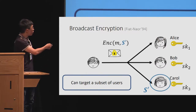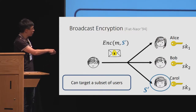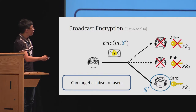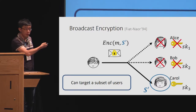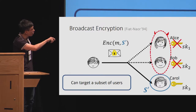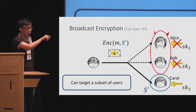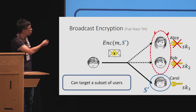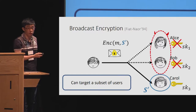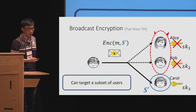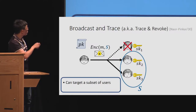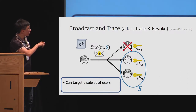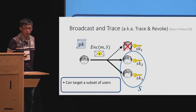Similarly, if the target set of authorized users includes either Alice or Bob, security requires that even if they collude by combining the information of their secret keys, they won't be able to infer any meaningful information about the message. So what's Broadcast and Trace? It's a way to combine both.